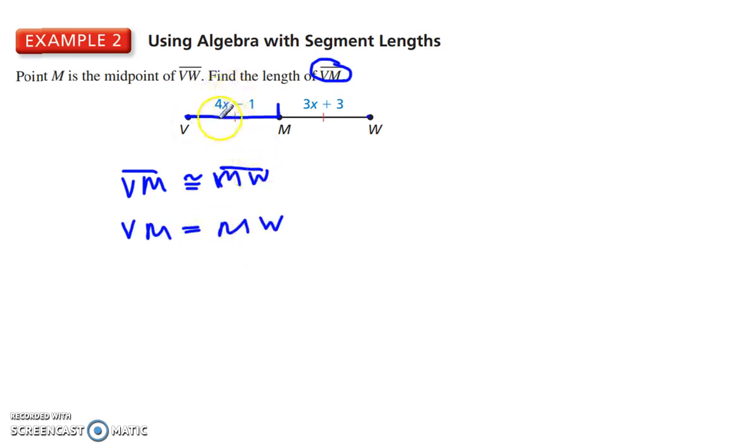So we can substitute here 4x minus 1 is equal to 3x plus 3, and then we solve. So we'll subtract 3x from each side, cancels out here, leaves us with x minus 1 is equal to 3, positive 3, add 1 to each side, and we get x is equal to 4. Careful, this is not our final answer.